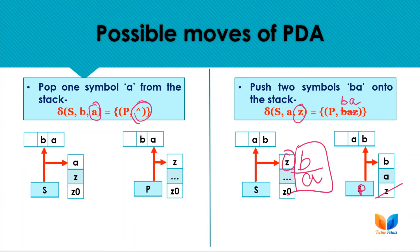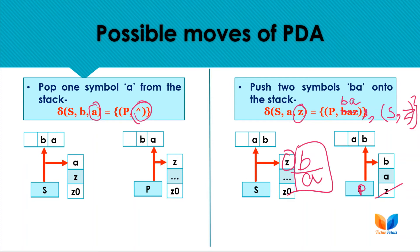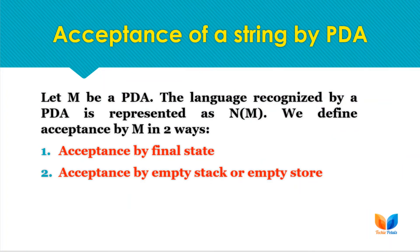These are all the possible moves of PDA. You can also have multiple moves from one transition — since PDAs are non-deterministic, you can move to more than one state at a time. We will be considering non-deterministic PDAs in further lectures. Now let's look at string acceptance by PDA.